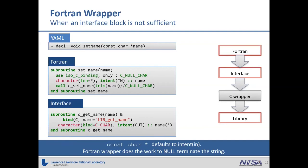Sometimes just the interface block is not enough. In this example there's a const char star string coming in. Since it's const, we know it's intent in. The Fortran wrapper will convert it from blank-filled into a null-terminated string, and then the interface is just a char star. When you use this function, you don't have to null-terminate things yourself. There is a copy involved, but it's the same copy you would do if you were null-terminating it yourself.